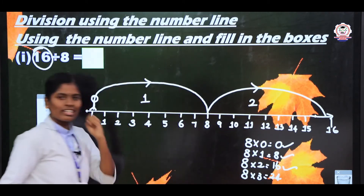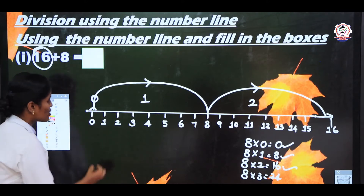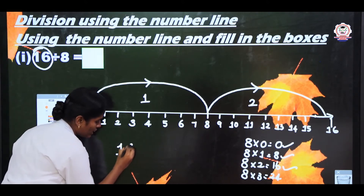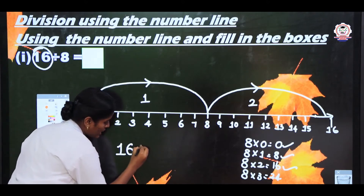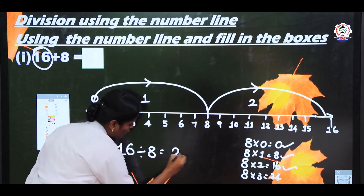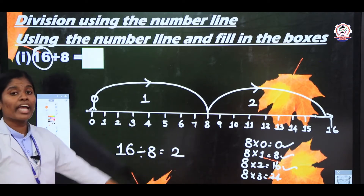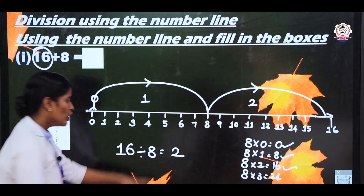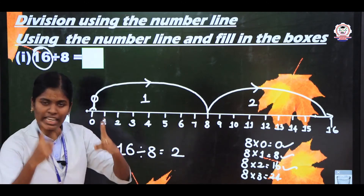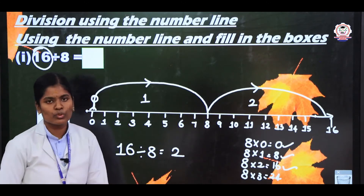So the answer is 2. Now write the division form: 16 divided by 8 equals 2. Here you jumped a total of 2 times, so the answer is 2.